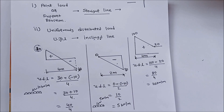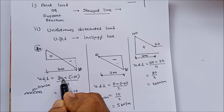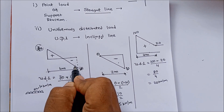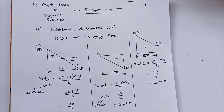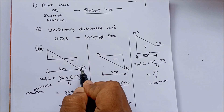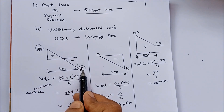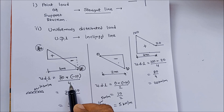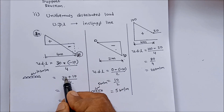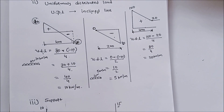How do we calculate UDL? UDL equals left side force minus right side force divided by length. Since the right side force is below the line, it is taken as negative, so it is minus 10. Therefore: 30 minus (minus 10) divided by 4, which gives 30 plus 10 divided by 4, equals 40 by 4, that is 10 kN per meter.